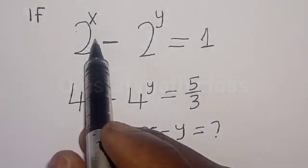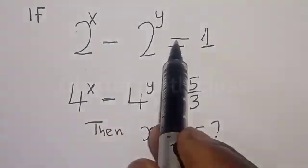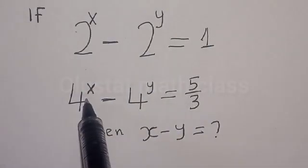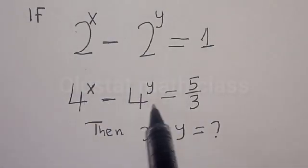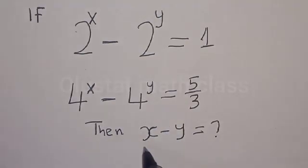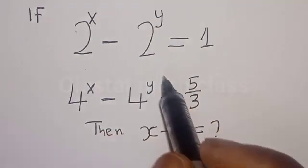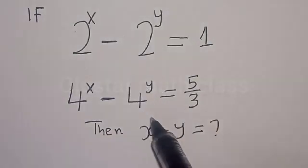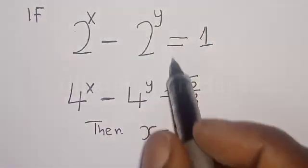If 2 raised to power x minus 2 raised to power y is equal to 1, and 4 raised to power x minus 4 raised to power y is equal to 5 divided by 3, then what is the value of x minus y? Hi everyone, welcome to my class. In this class, we want to find the value of x minus y from this given equation.